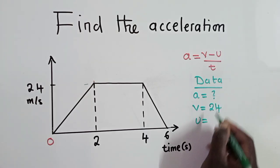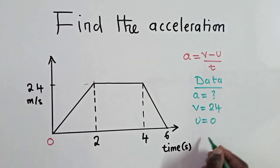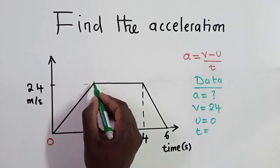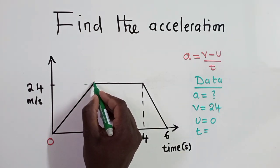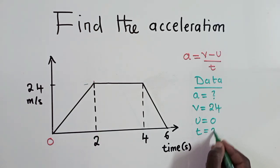The initial velocity, initial velocity, it's where it started from. It started from zero. So you write zero. And then the time. You just go where final velocity is here at this point. It's here. Now go down here. Check the time. It's a two. It's two seconds.